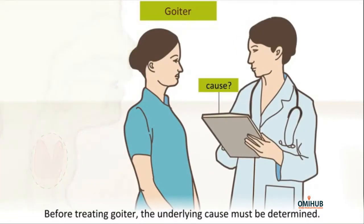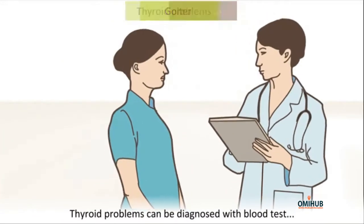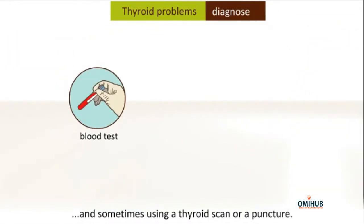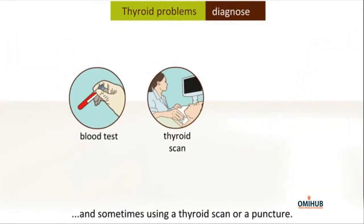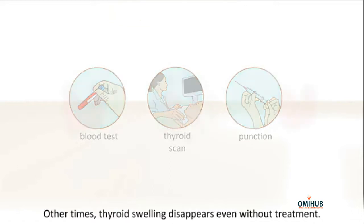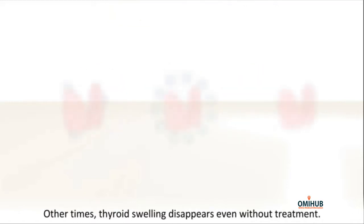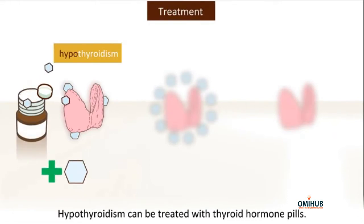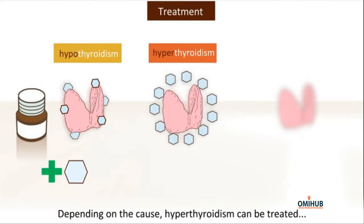When you have goiter, there can be problems with swallowing or breathing. Before treating goiter, the underlying cause must be determined. Thyroid problems can be diagnosed with blood tests, and sometimes using a thyroid scan or a puncture. Other times, thyroid swelling disappears even without treatment. Hypothyroidism can be treated with thyroid hormone pills, depending on the cause.